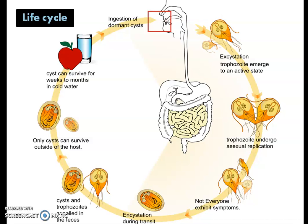In the life cycle of Giardia, the cyst form enters the human body by ingestion of contaminated food or water. It reaches the gastrointestinal tract and finally the small intestine, where excystation begins — that means they exit from the cyst form into the trophozoite form, which is the active form. They then undergo asexual replication by binary fission.